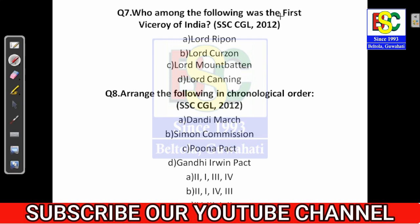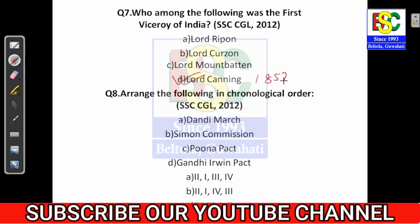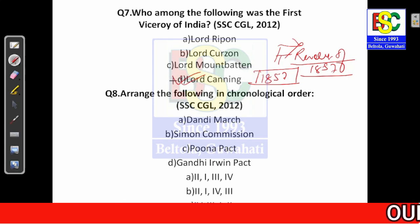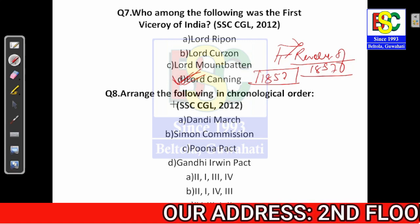Question number seven: who was the first viceroy of India? This is again a very important question in modern history. The answer is Lord Canning. In 1857, when modern history started with the Revolt of 1857, Lord Canning was the viceroy of India. He was the person who suppressed the Revolt of 1857 and was also the first viceroy of India.